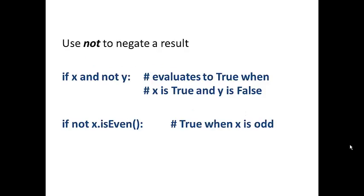You can use not to negate a result. So if x and not y is going to evaluate to true when x is true and y is false. So basically it just negates the y result. If not x.is_even, we're assuming here we have a function that we can call is_even for x.